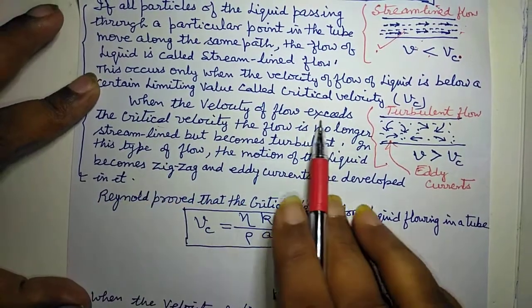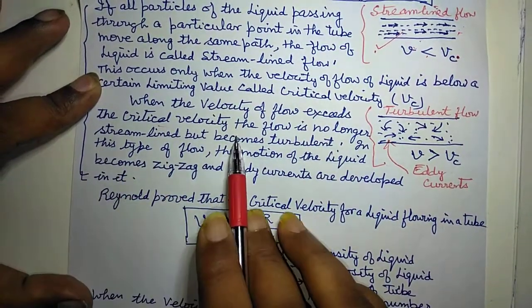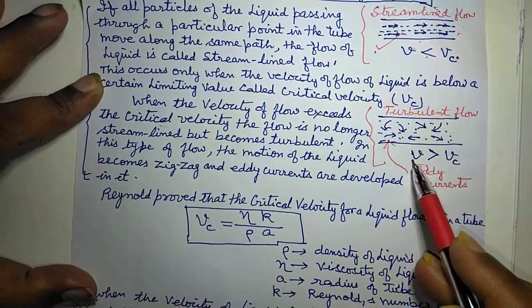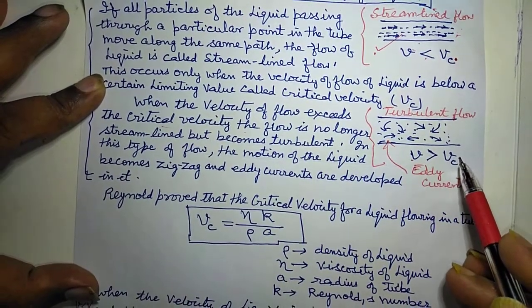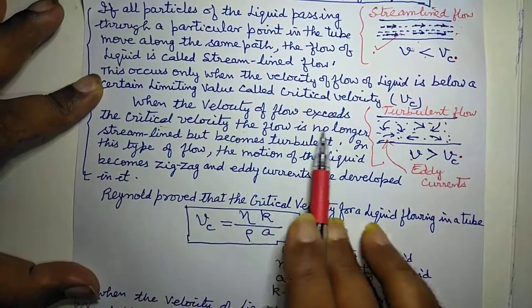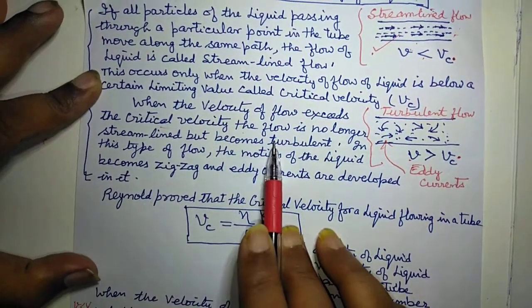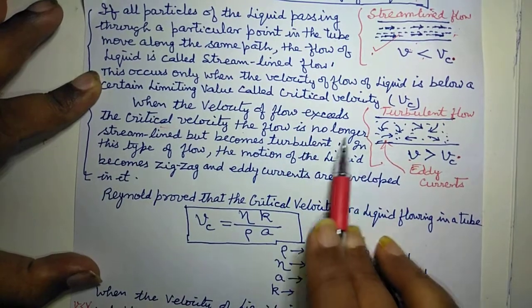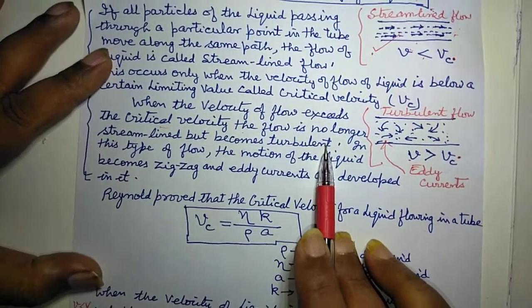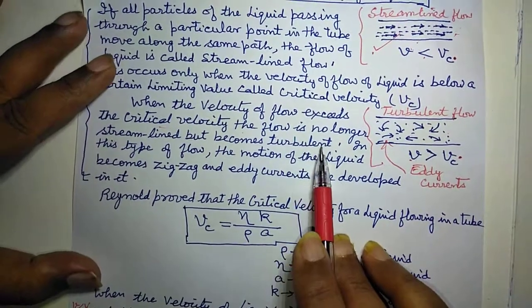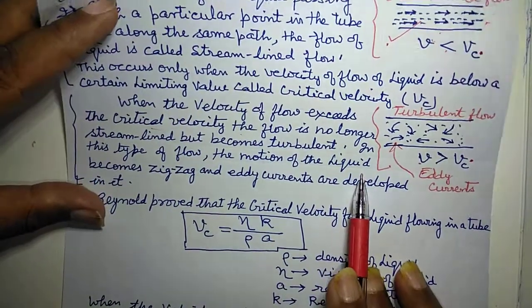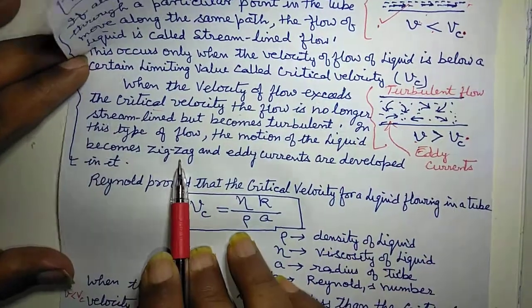Now when the velocity of the flow exceeds the critical velocity — yani agar in liquid particles ki velocity v is greater than vc, critical velocity se zyadha velocity se agar move kar raha hai — the flow is no longer streamlined but becomes turbulent. Ye turbulent flow ho jata hai, aur in this type of flow, the motion of the liquid becomes zigzag.